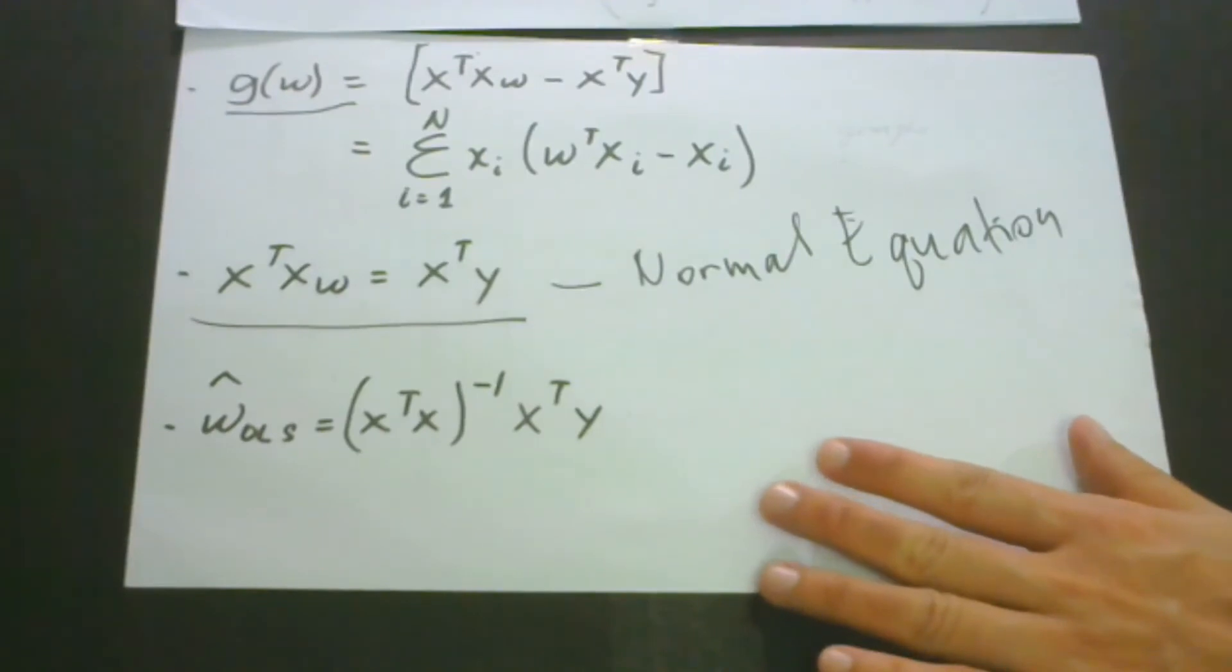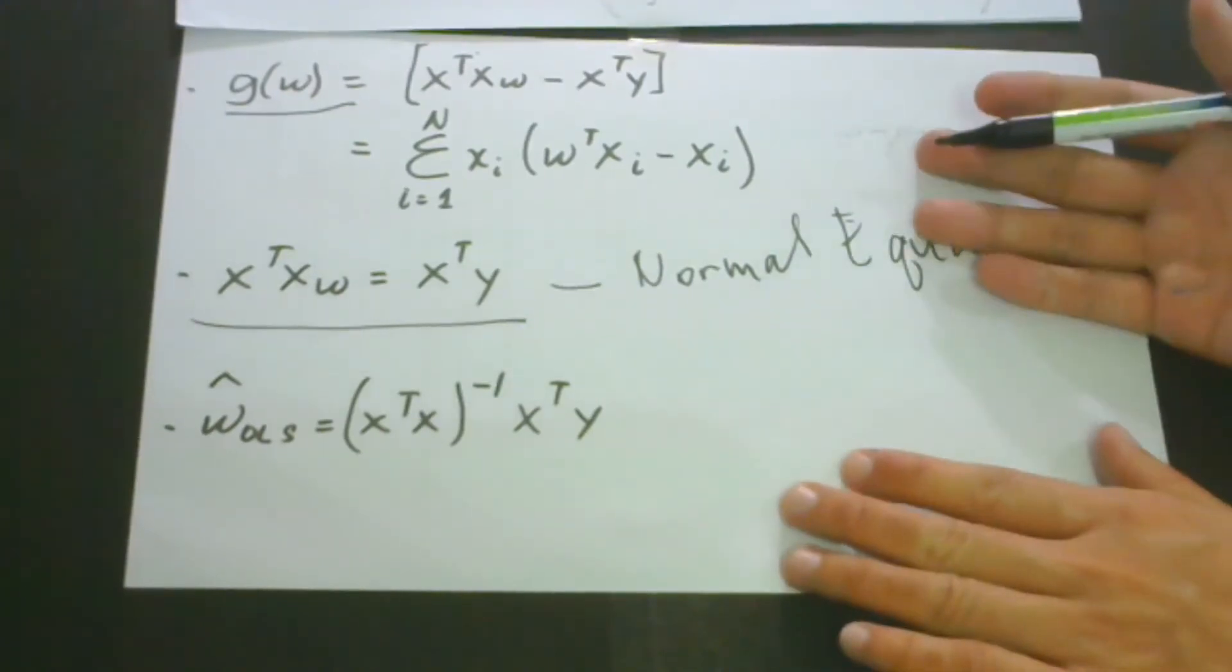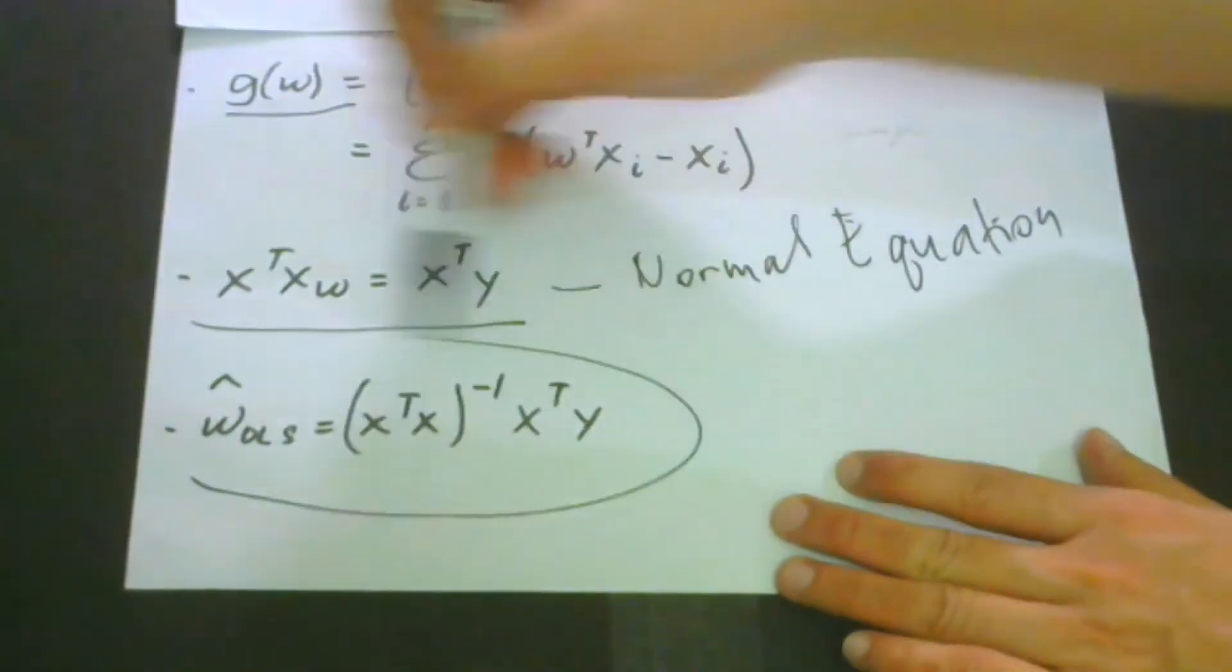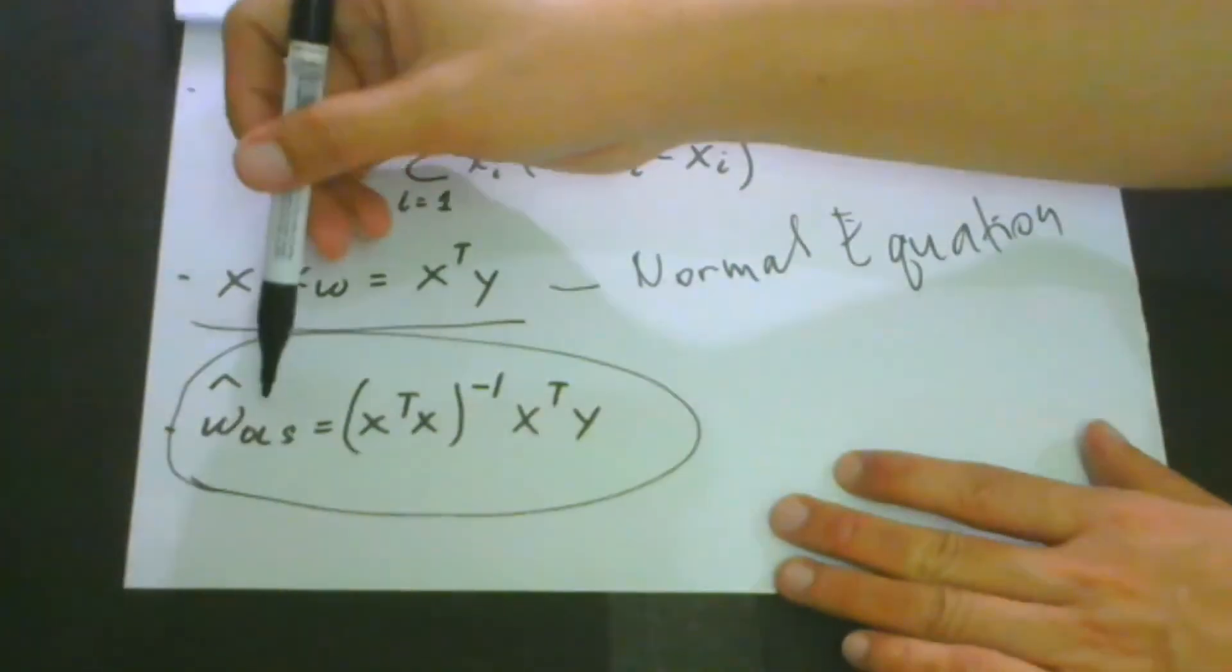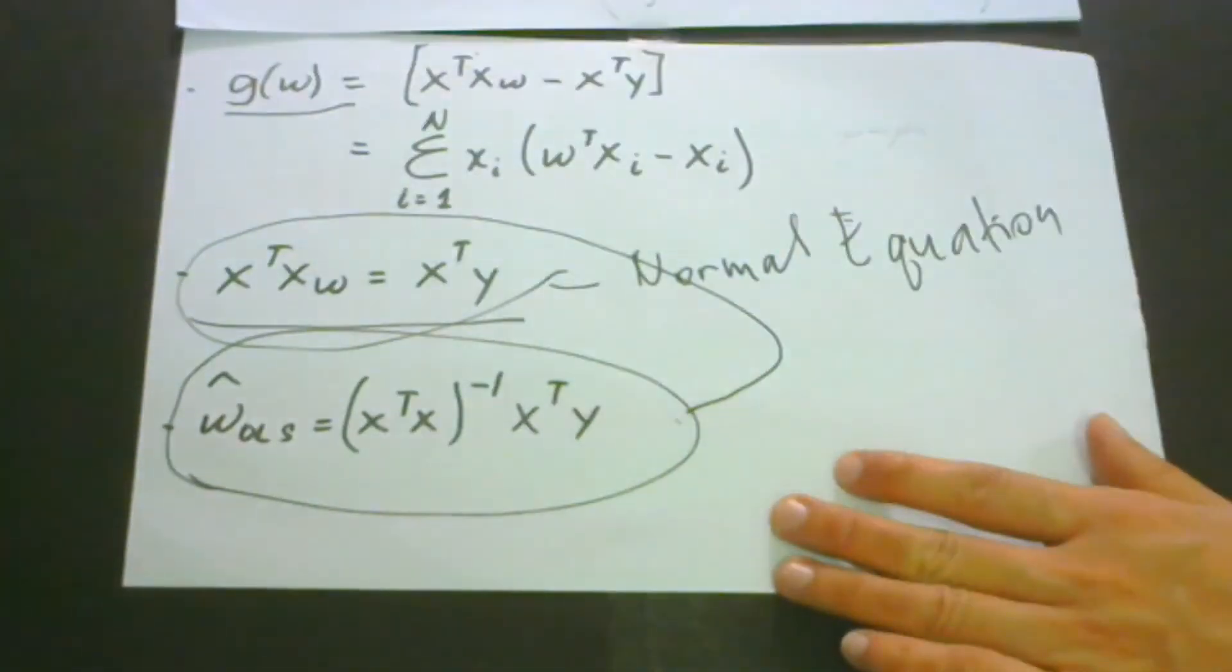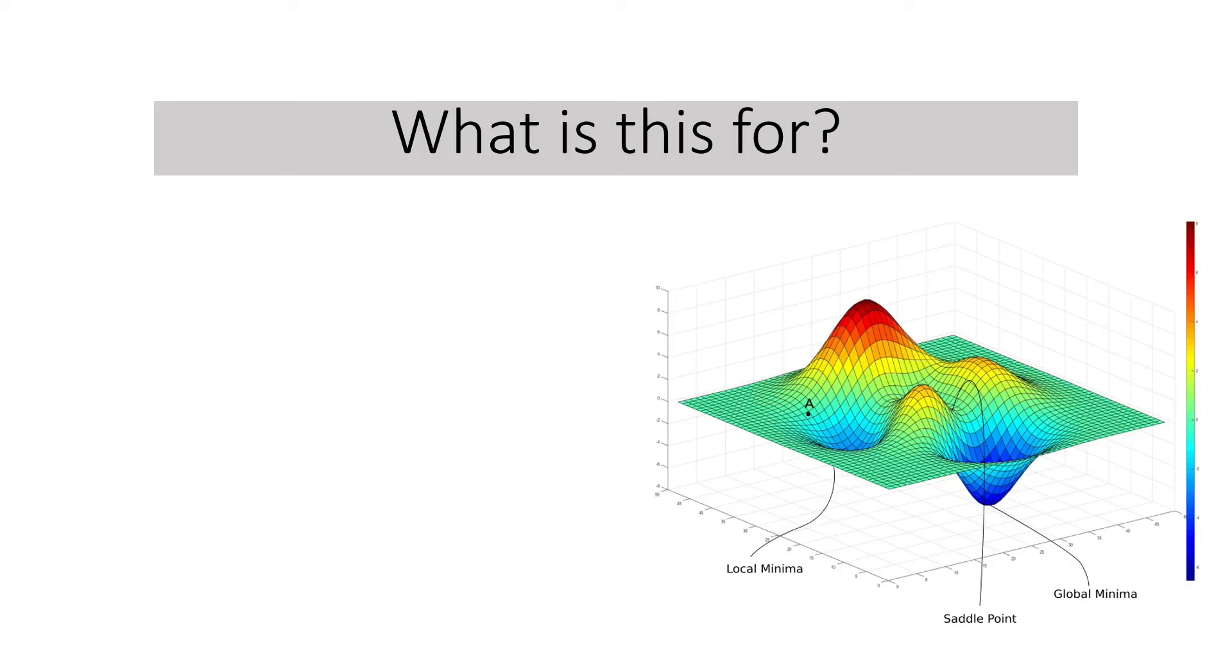If you could still remember our lesson when we talked about ordinary least squares, this is actually the form of our ordinary least square. This is its corresponding form for the maximum log likelihood.